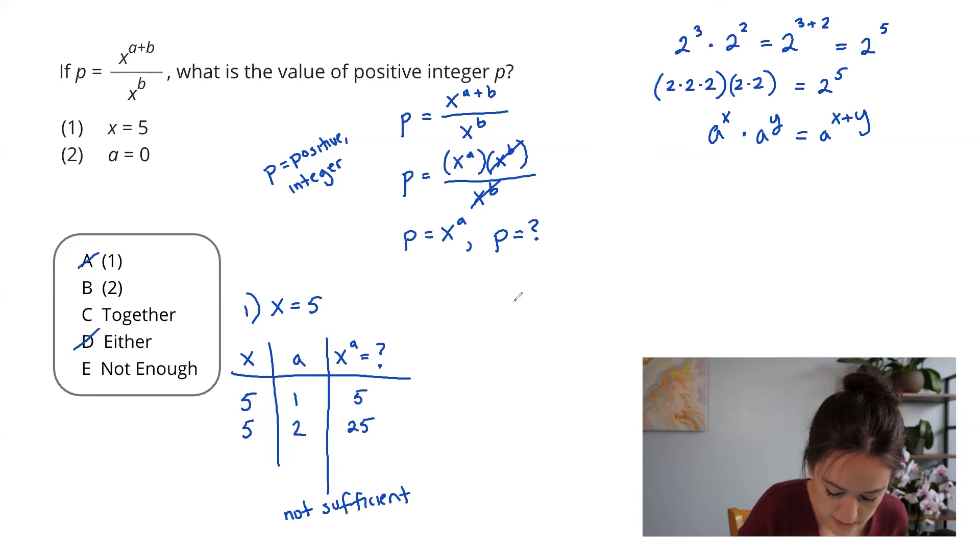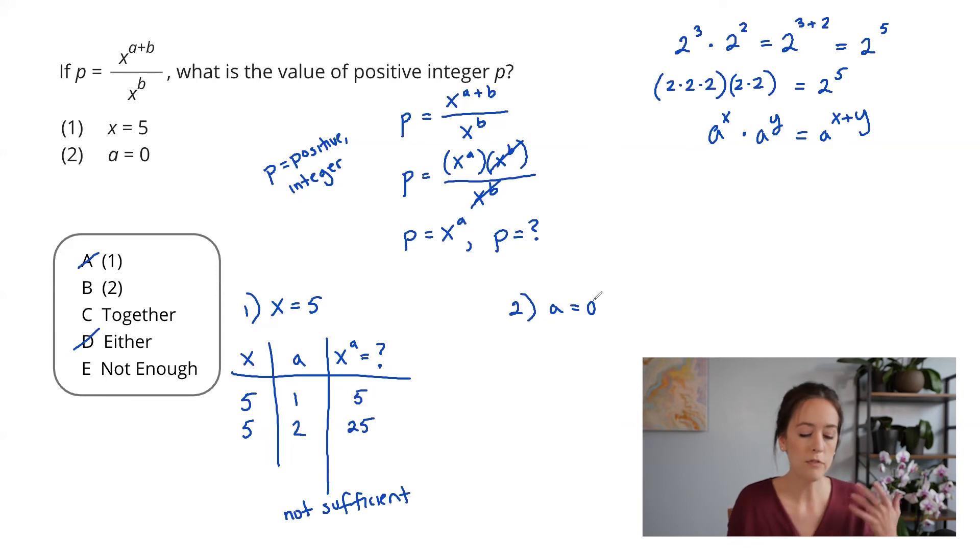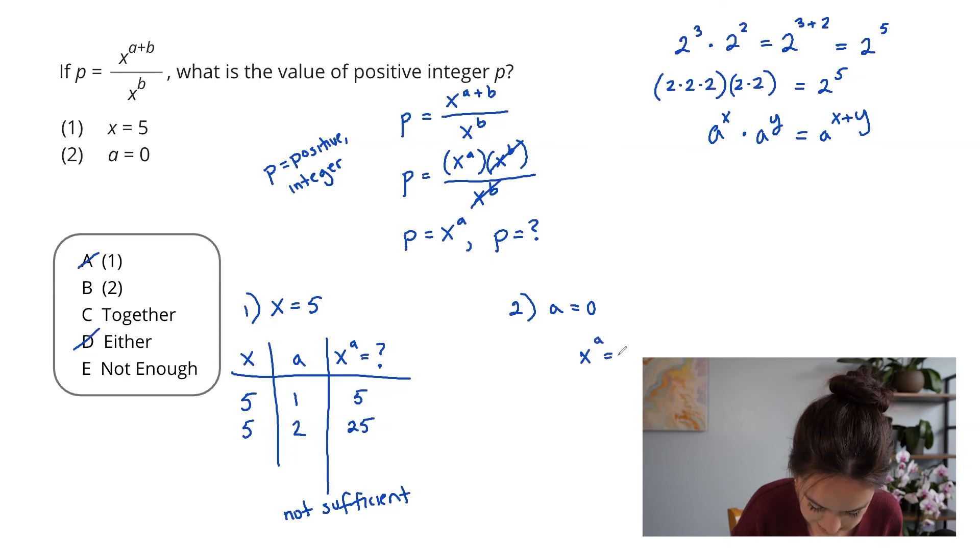Alright, moving on to statement two. And it's the same drill here. You might already be thinking, oh well, knowing x wasn't sufficient, so knowing a won't be sufficient either. But always take a quick moment to test it, because the GMAT is quite sneaky.